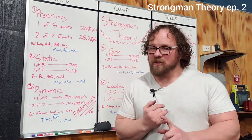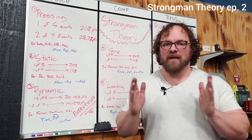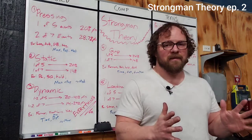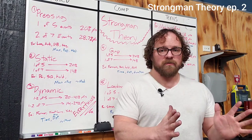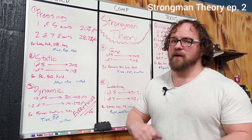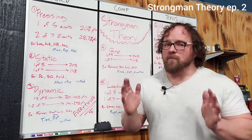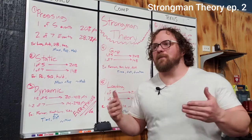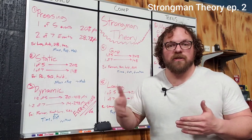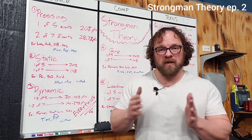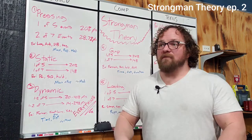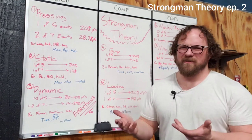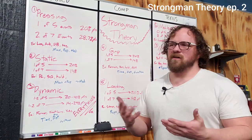Static events are typically scored in a repetition style — set weight, set time domain, as many reps as possible. You also see the max format: the three-attempt powerlifting style or last man standing. Sometimes there's a medley component where you go through multiple implements and then rep out on the final one, which is really more of a rep event — a fusion between the two.